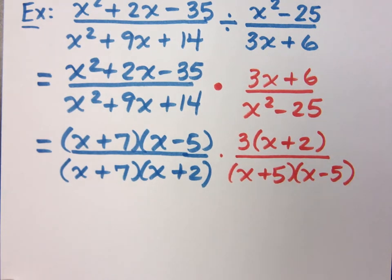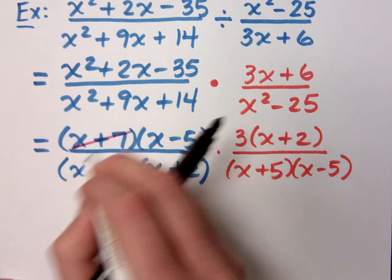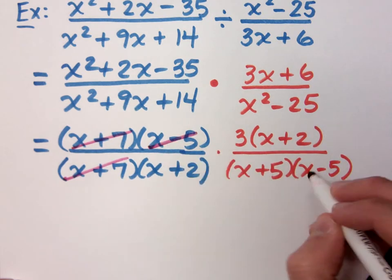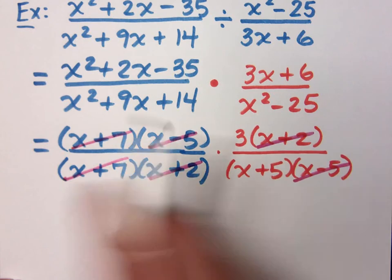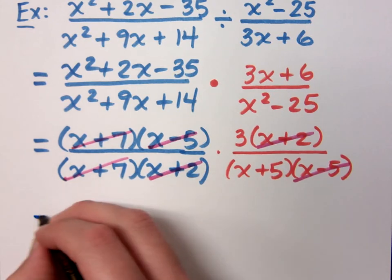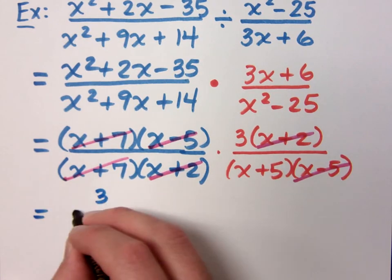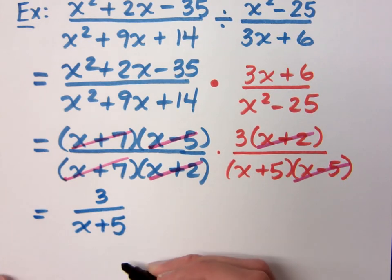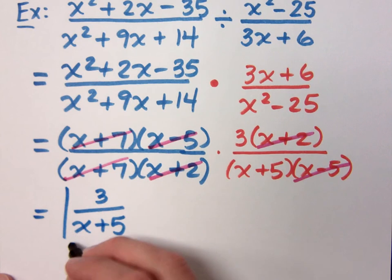Now, let's simplify this. How can I simplify? So X plus 7 is common. What else? X minus 5. X minus 5 and X plus 2. So what's left over? What's my answer? 3 over X plus 5. Do you all agree? Agreed.